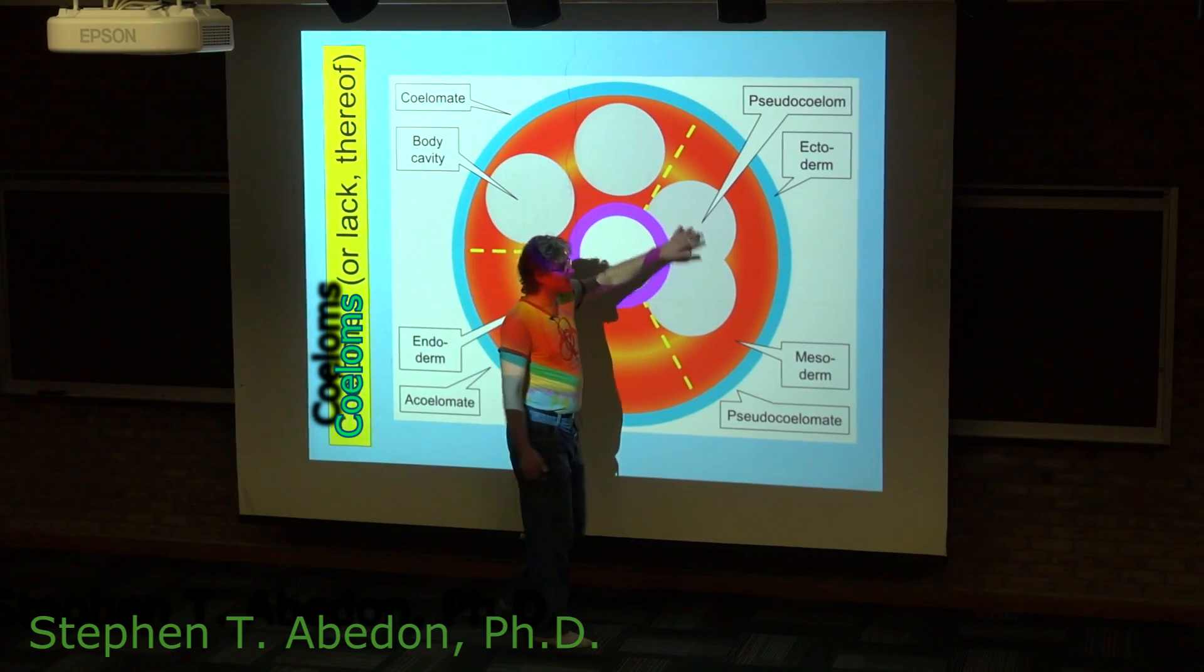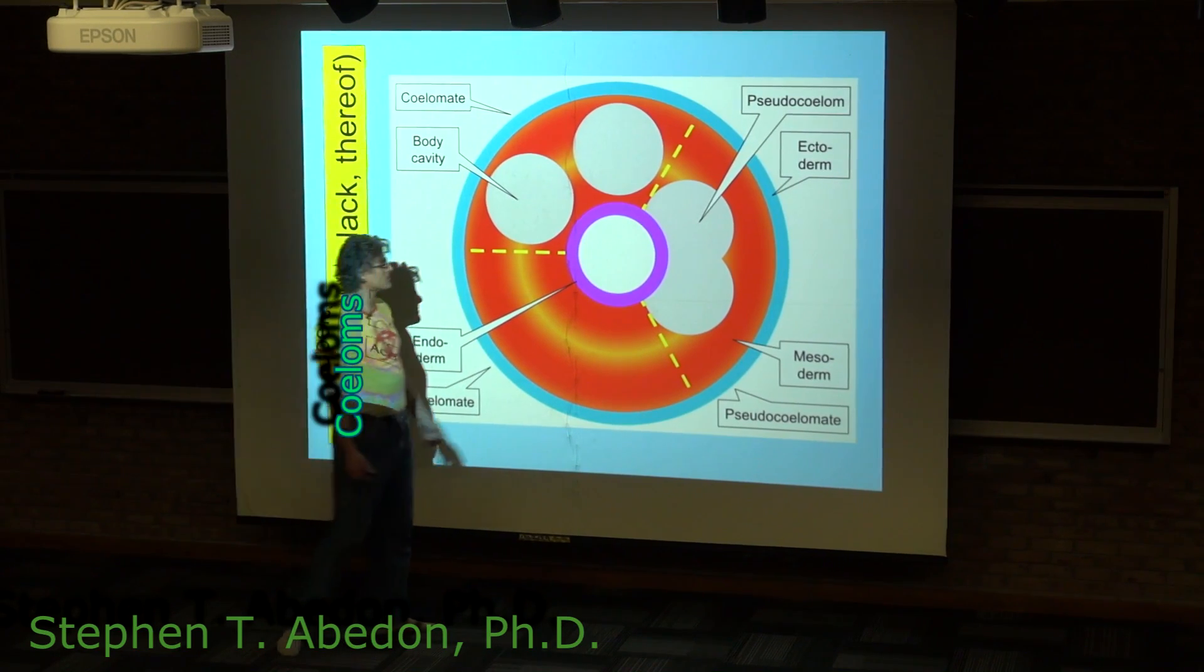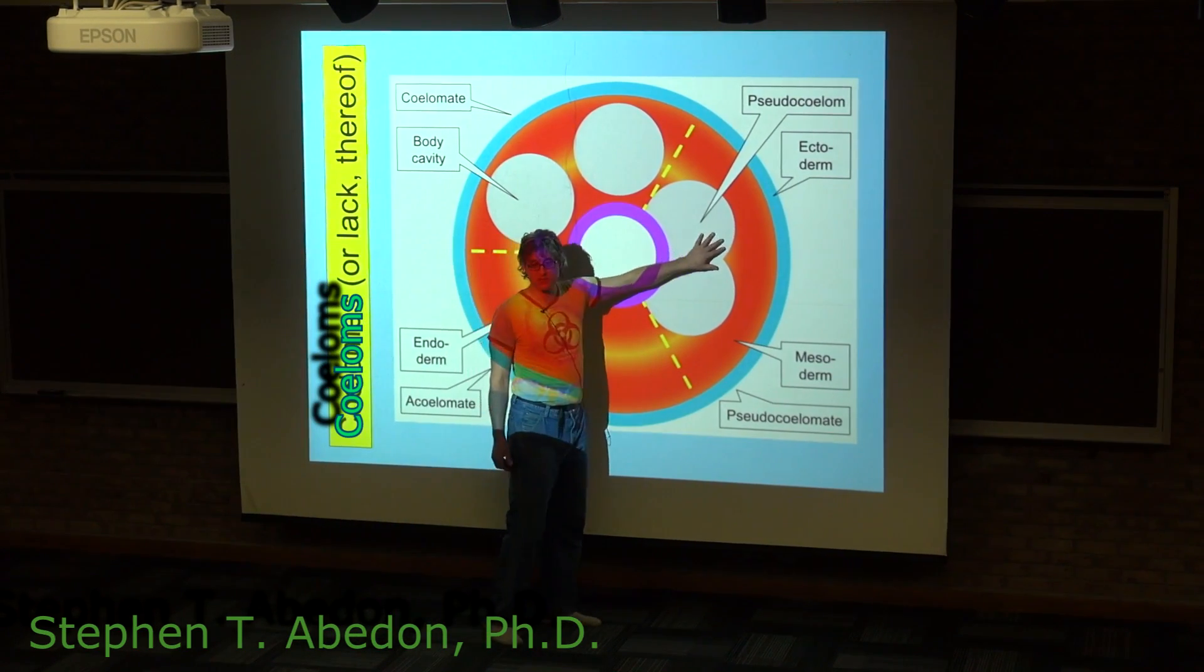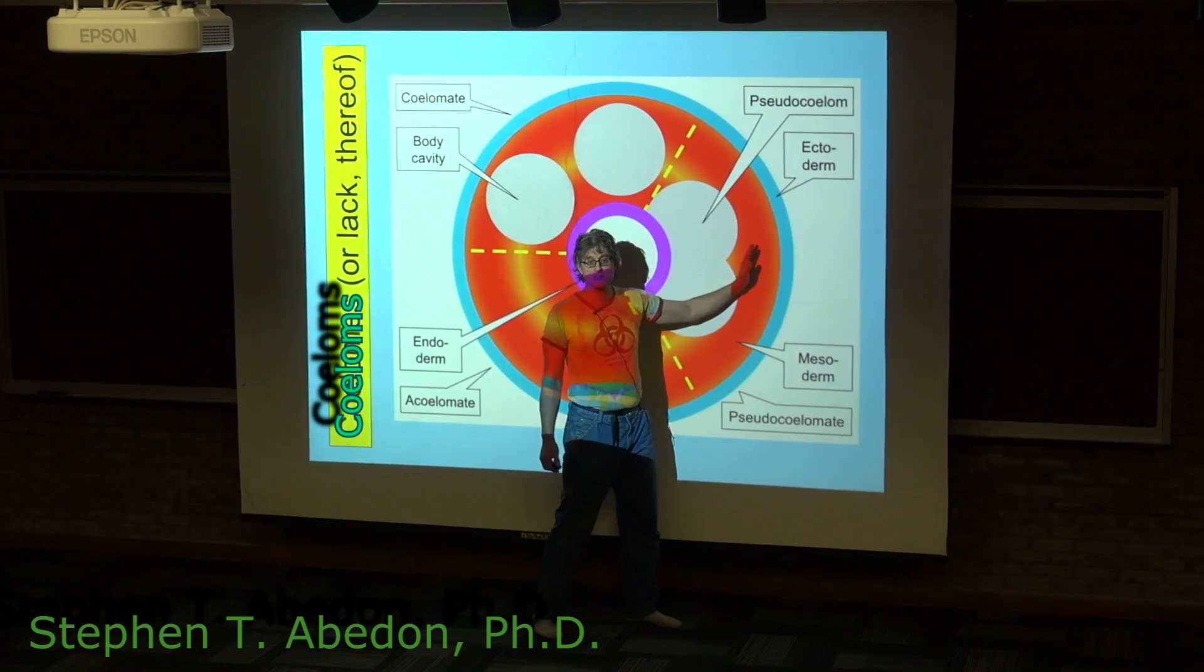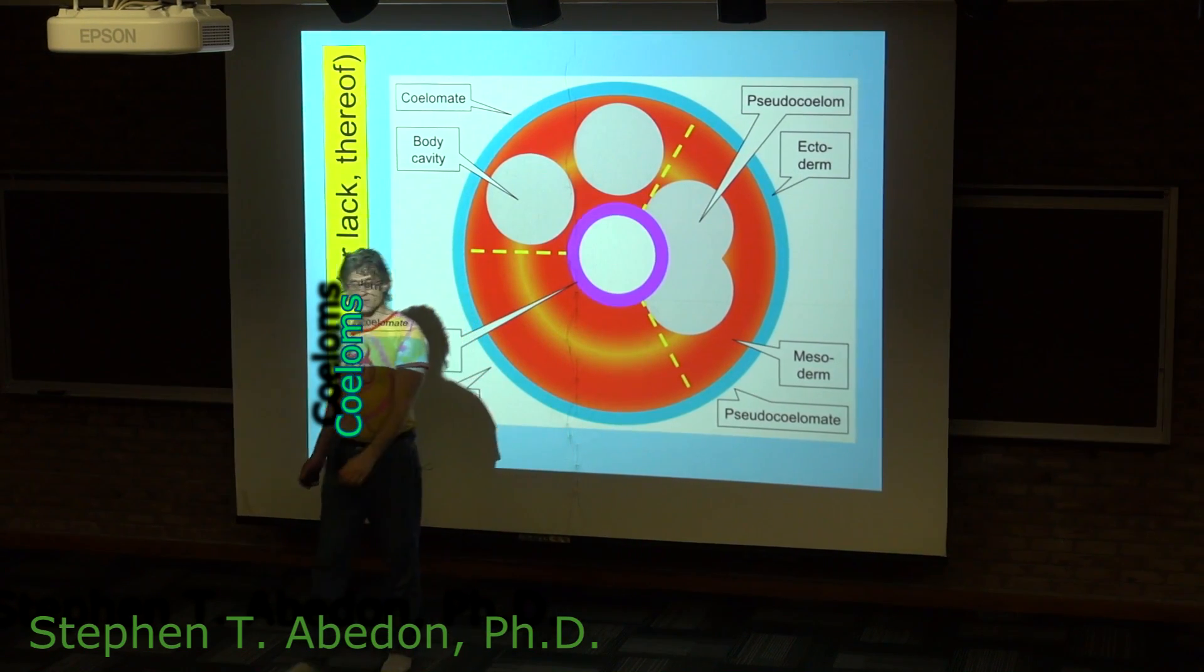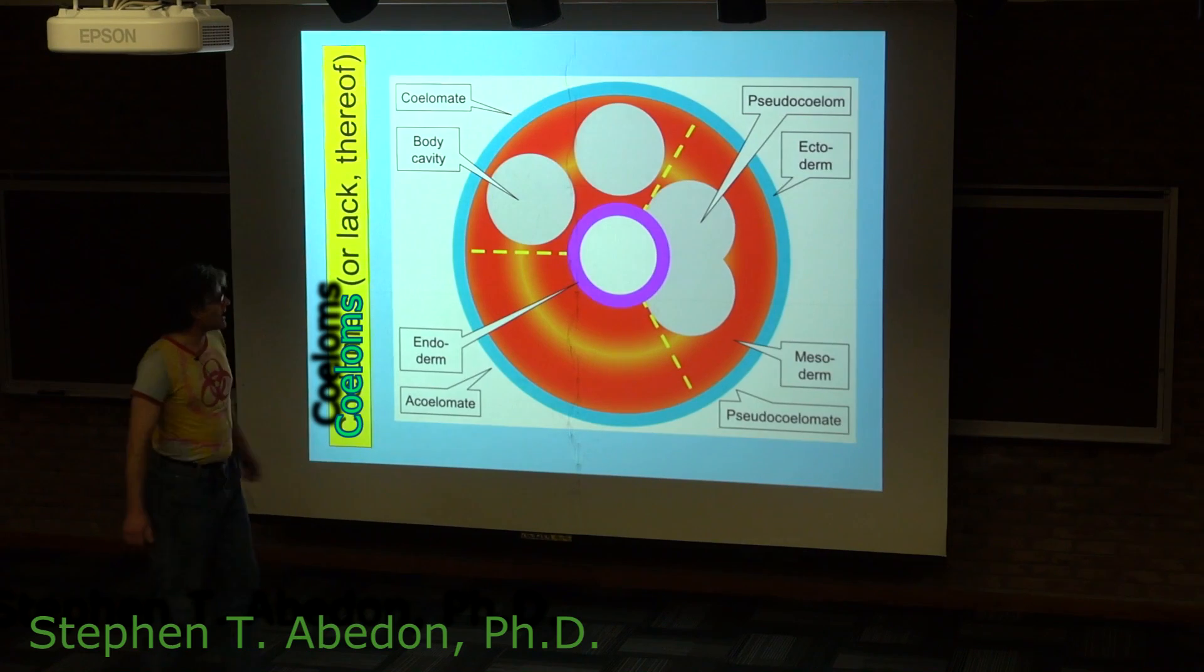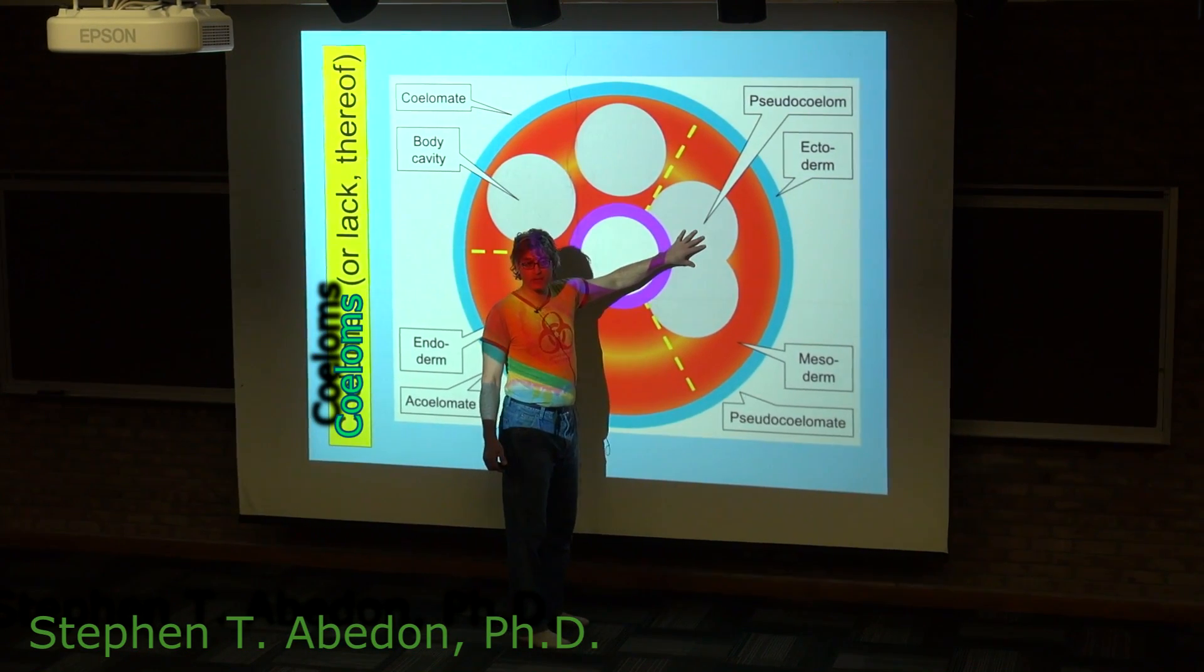Going up in complexity you see this with the roundworms and the rotifers. Here we have what's known as a pseudocoelom. You have the endodermal tissue, the ectodermal tissue, the mesodermal tissue, but you have a gap between the mesodermal tissue and the endodermal tissue. This gap allows for circulation within the body of the organism.